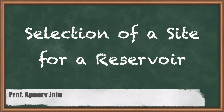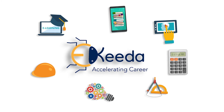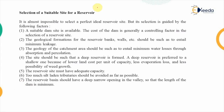In this video we are going to discuss the selection of a reservoir site. A reservoir is a pool of water which is accumulated when a barrier is constructed across a river. There are a few factors which help us in deciding the suitable site for a reservoir. It is almost impossible to select a perfect ideal reservoir site because if we are satisfying one criteria there will be a deviation from another, so we select a site which satisfies the maximum number of parameters.